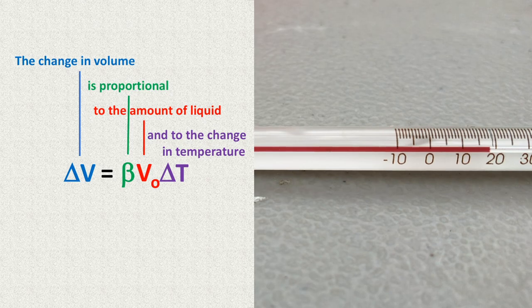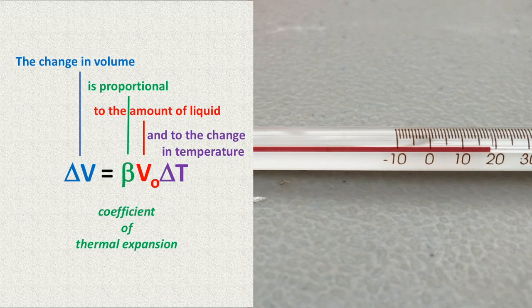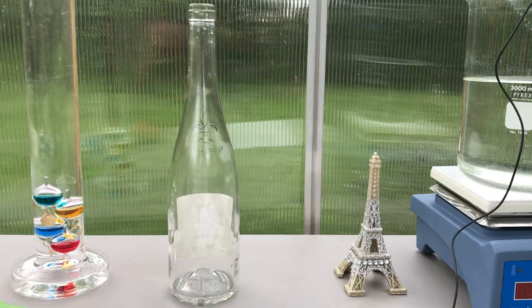The constant of proportionality is called the coefficient of thermal expansion, which we label with the Greek letter beta. The coefficient of thermal expansion is the fractional change in volume of a material with each degree of temperature change.